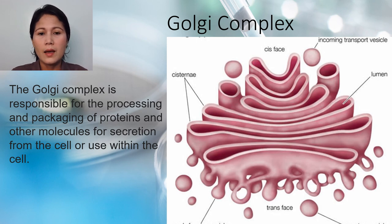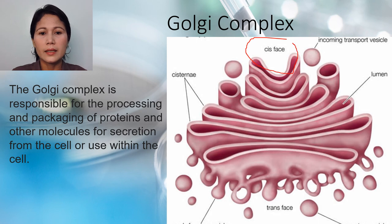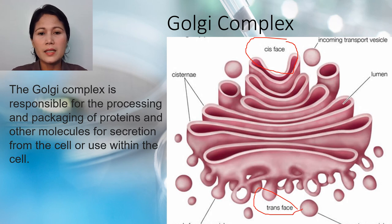This stack of sacs has two sides. The cisternae on the cis side often faces the endoplasmic reticulum, while the cisternae on the trans side faces away from the endoplasmic reticulum.